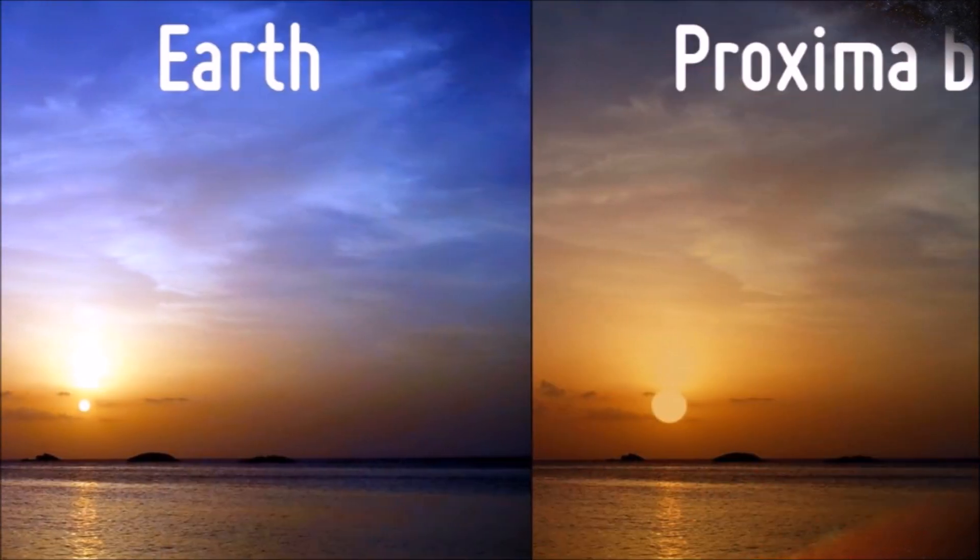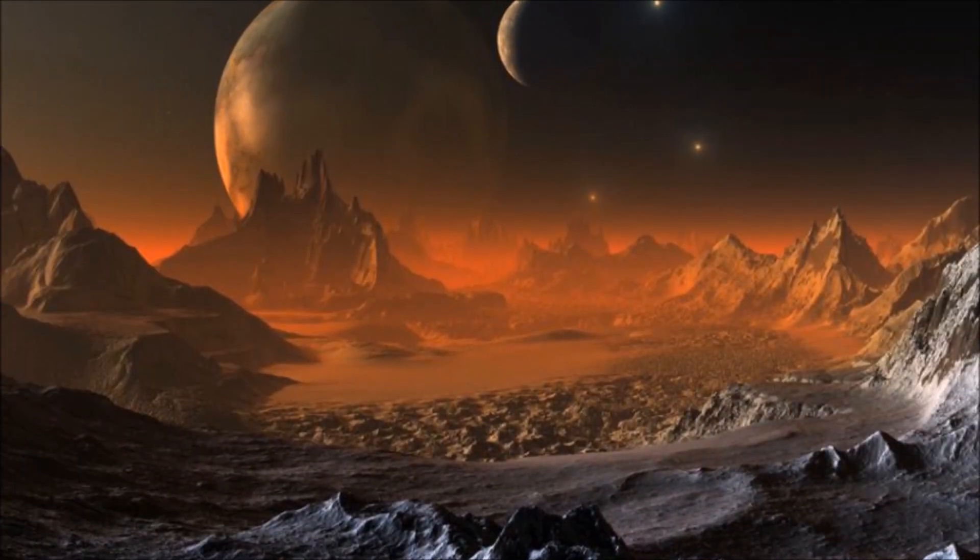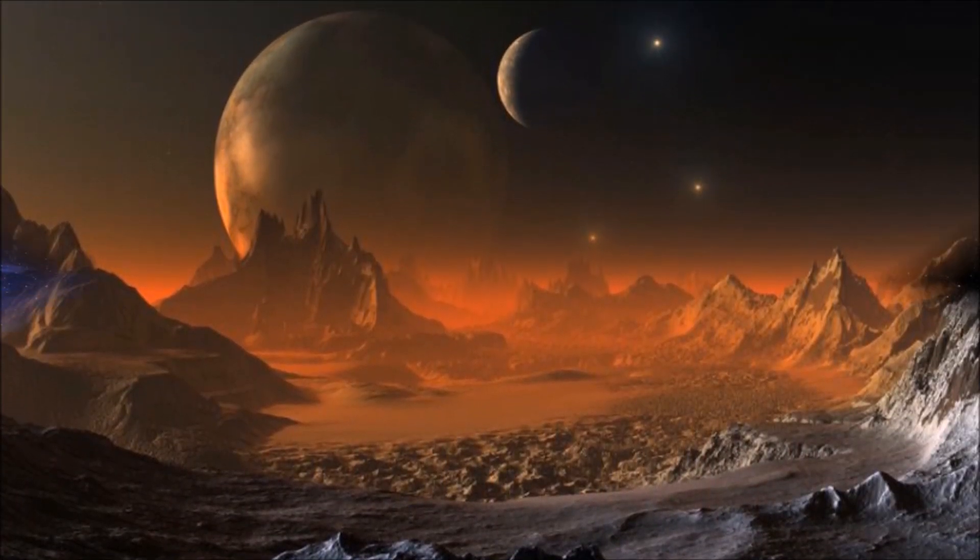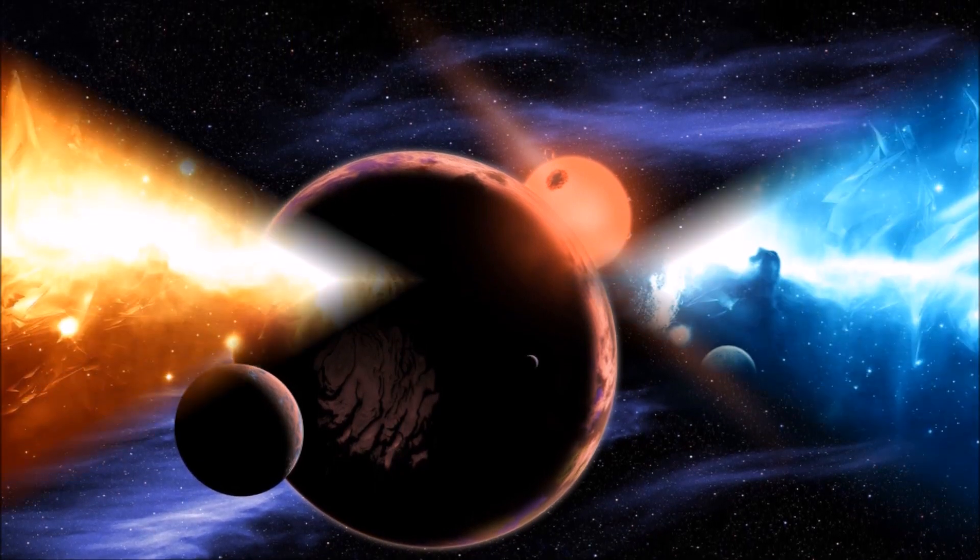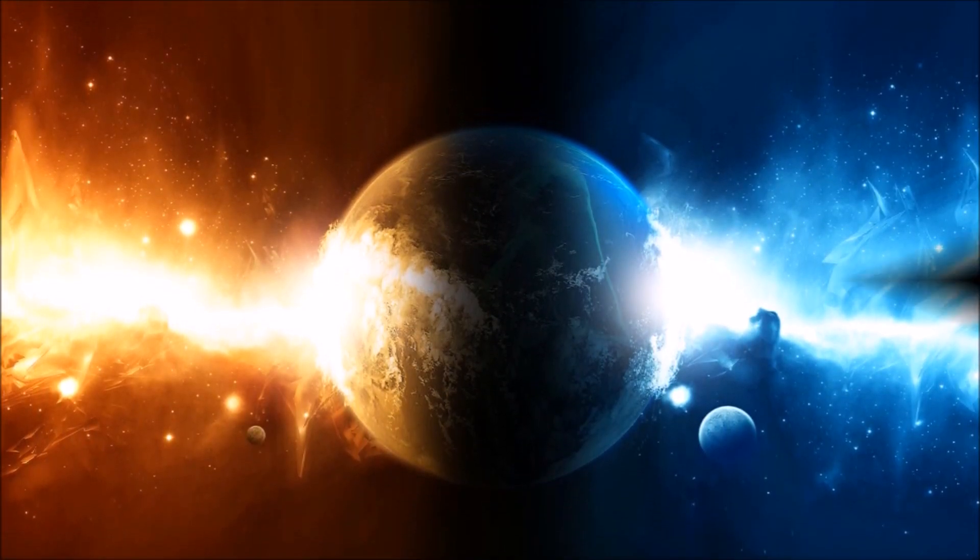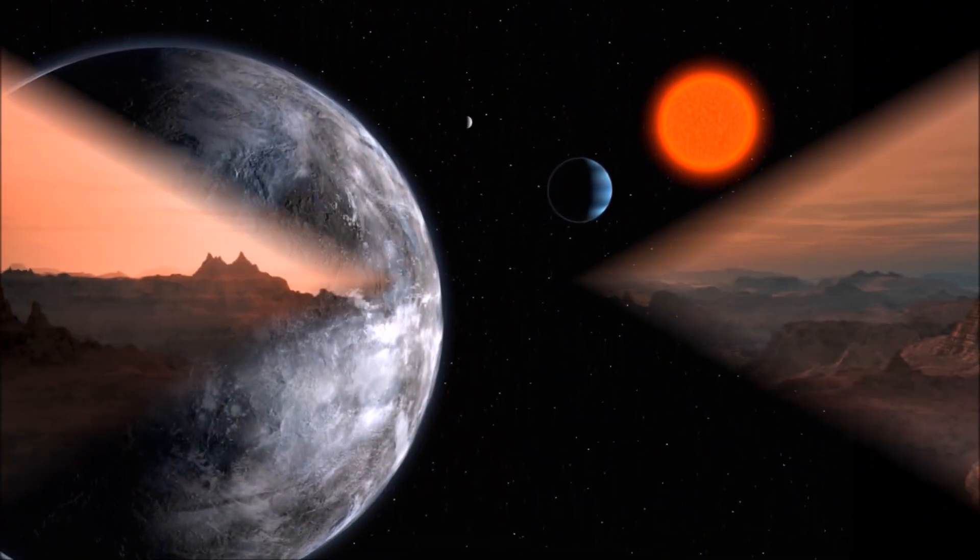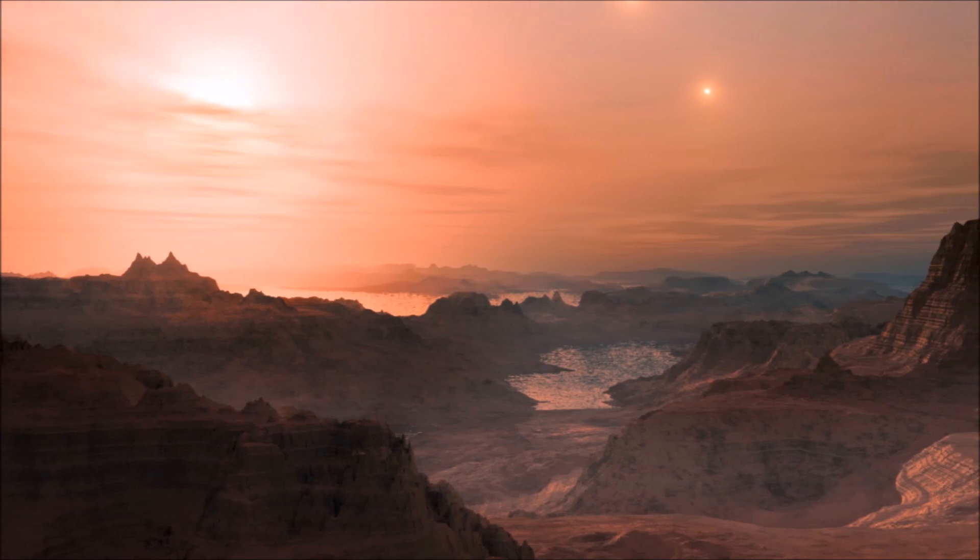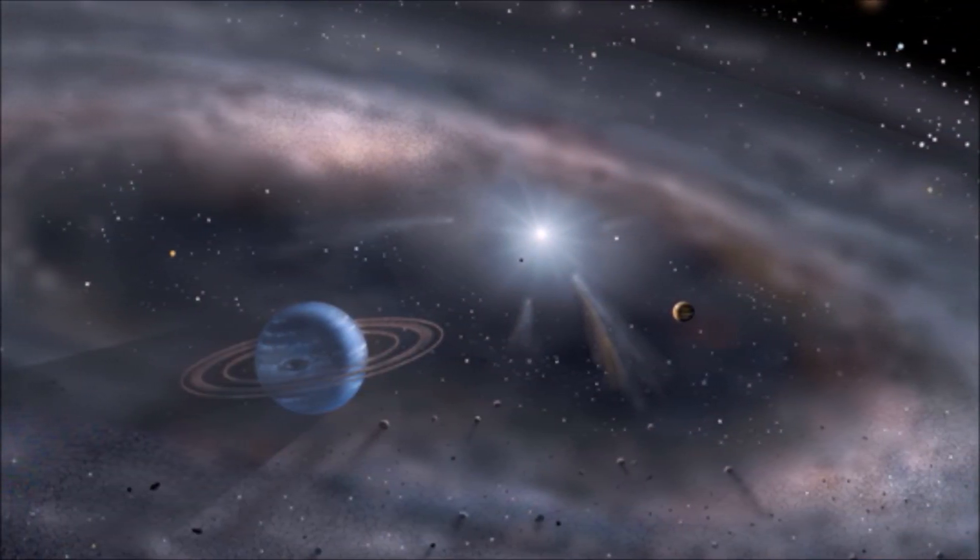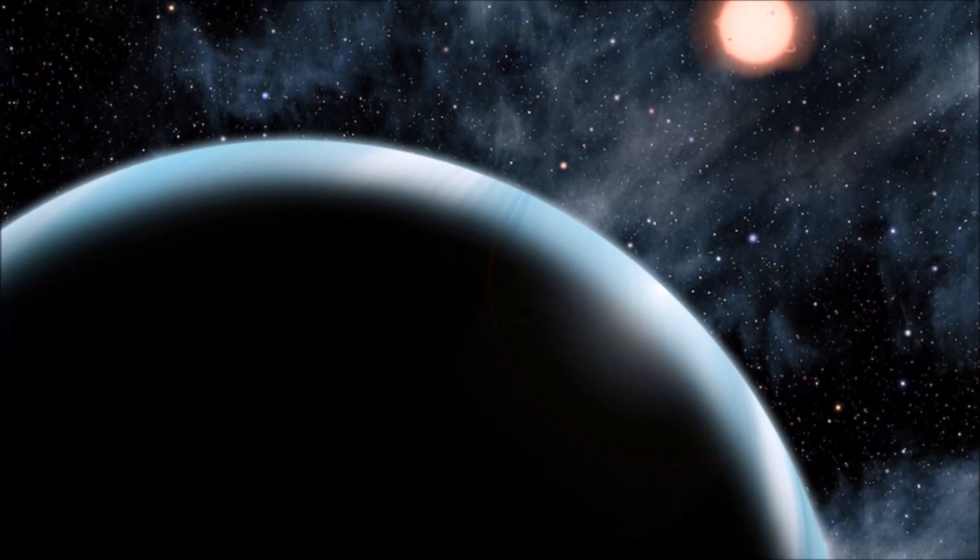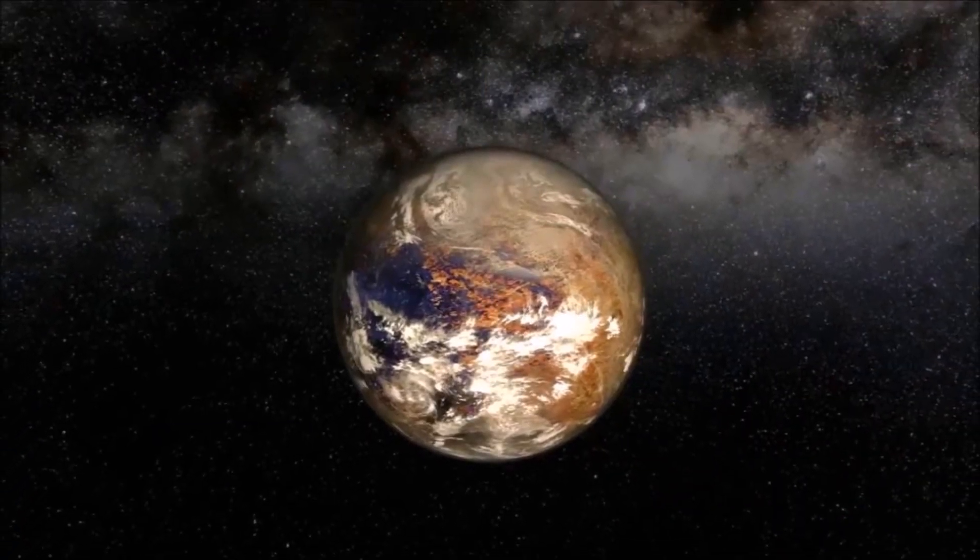For example, the stellar wind pressures faced on Proxima Centauri B from the star are violent and over 2,000 times what we experience here on Earth. In addition to this, Proxima Centauri is known as a flare star and goes through rapid changes in brightness and energy emissions that create solar storms. Therefore, it's possible that Proxima B is irradiated if it doesn't have a strong magnetic field or a protective atmosphere.